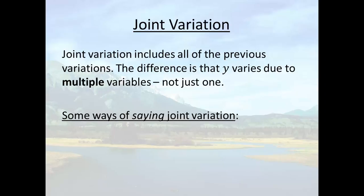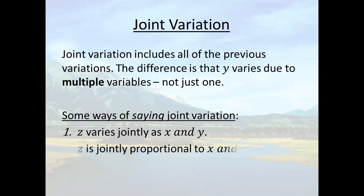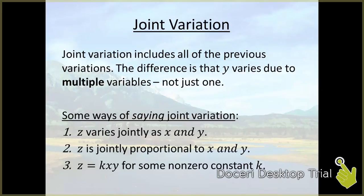And there is no set formula for it because there's many different ways that you can have joint variation. It isn't strictly one type of formula. And you'll understand that as we do an example. Again, some ways of saying it. z varies jointly as x and y. z is jointly proportional to x and y. z equals kxy for some non-zero constant k. Now, I did not use that formula on this because that's one of many different types of formulas that you can have for this. The key to all of this is that you have x and y in all those situations. So z varies due to multiple variables.